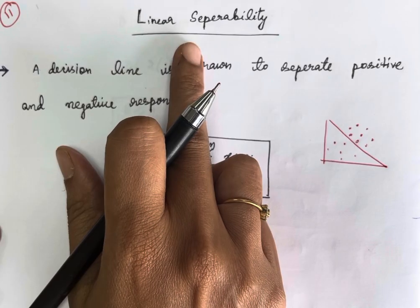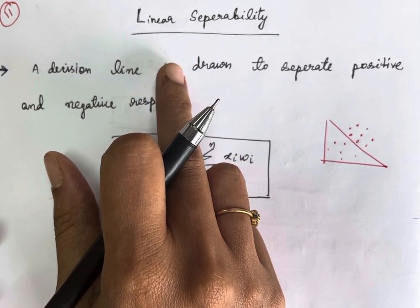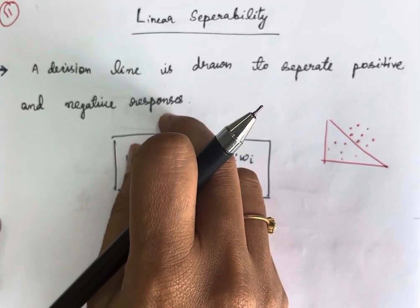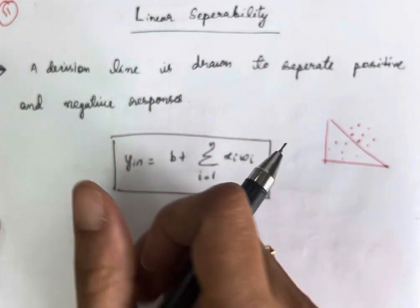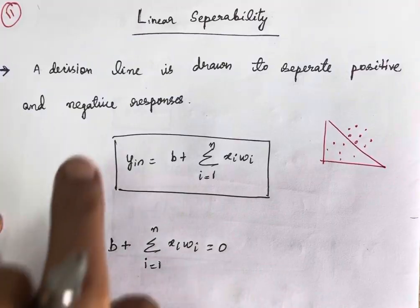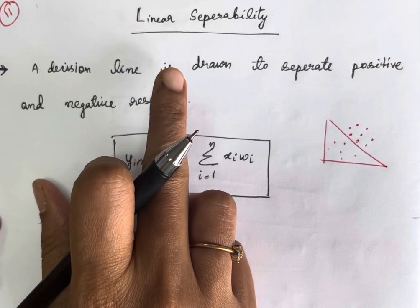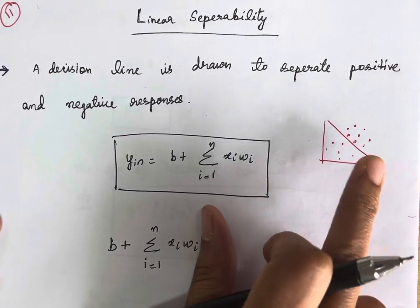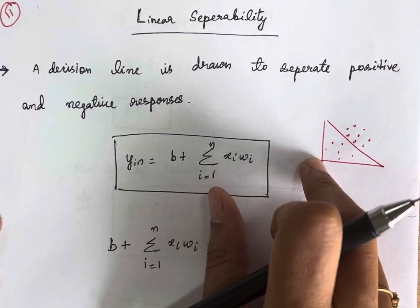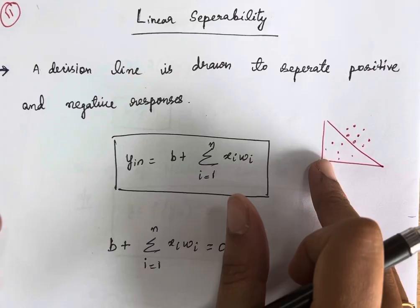Most of the events in nature are non-linear. Neural networks will not give you an exact solution for all types of problems — they will give you an approximate solution. So linear separability will divide the input space into two regions based on the output, whether it is positive or negative.